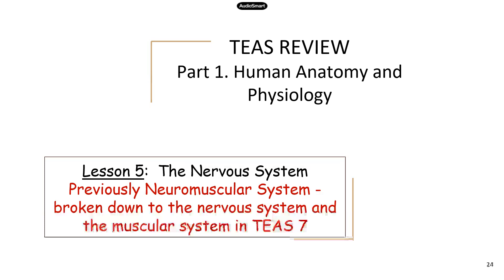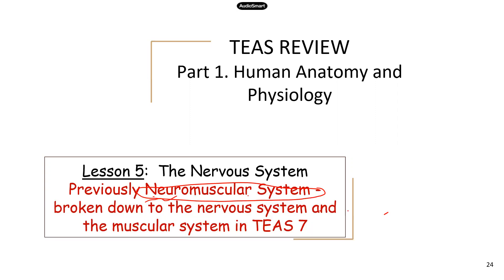Today we're going to look at the nervous system. This lesson was previously part of the neuromuscular system. In TEAS 6, the nervous system and muscular systems are combined into the neuromuscular system. But in TEAS 7, this old chapter has been broken down into two separate body systems, which is great. Today we're going to focus on the nervous system.